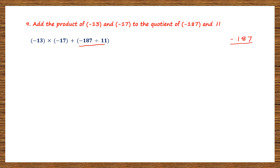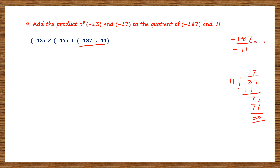So we have minus 187 divided by 11, which has a plus sign. In division, when signs are different, the answer is negative. Let's divide 187 by 11: 11 ones are 11, remainder 8 minus 1 is 7, bring down 7; 11 sevens are 77, remainder 0. The quotient is 17, so the result is minus 17. Now we have: minus 13 into minus 17 plus minus 17.